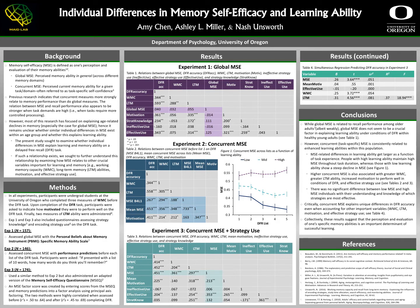Furthermore, Concurrent MSE continues to explain unique differences in delayed free recall accuracy, even when accounting for its relationship with these other important factors. So, future research should continue to explore other reasons for which MSE predicts unique variance in learning ability. Ultimately, our results suggest that one's perception and evaluation of their specific memory abilities is an important determinant of successful learning.